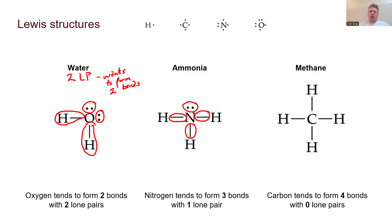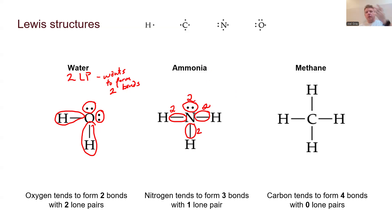This all adds up to our octet rule. Atoms want to get eight electrons around them, and they are either going to share electrons in bonds — here's two, here's two, here's two — or they'll have a single non-bonded pair. Ammonia here has eight electrons surrounding it: two, two, two, and two.